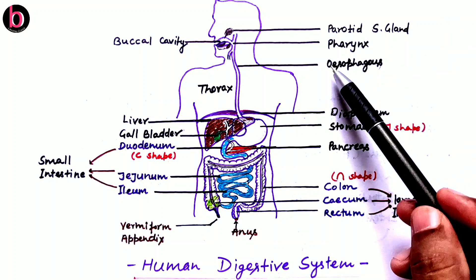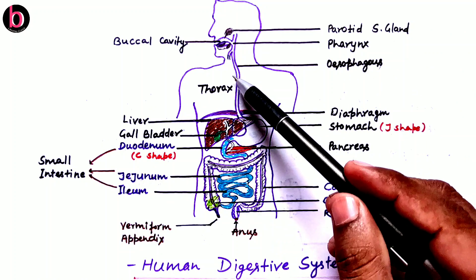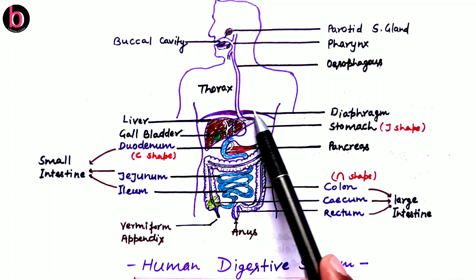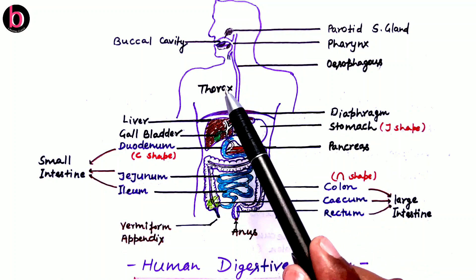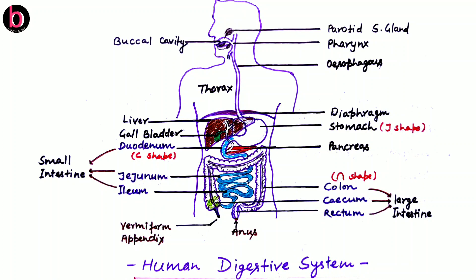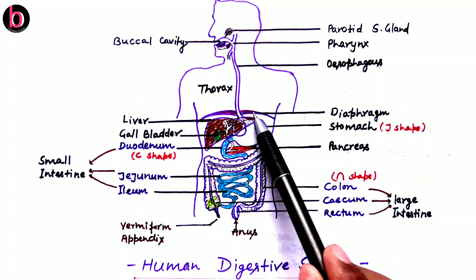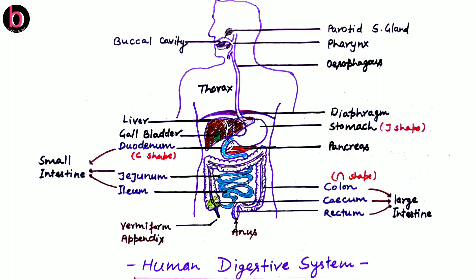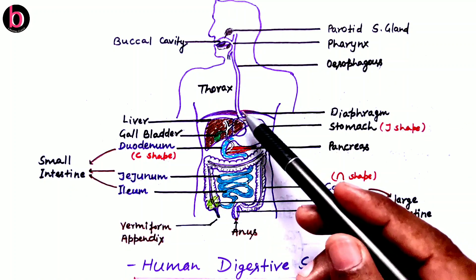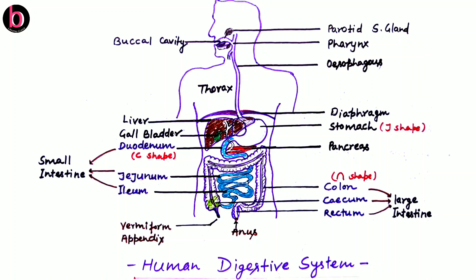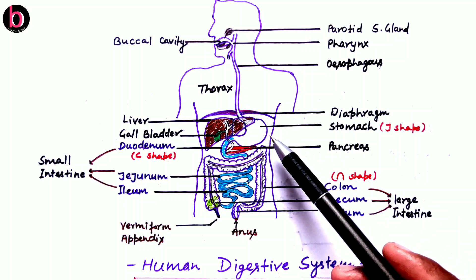After the pharynx there is the next elongated tube-like structure known as the esophagus or food pipe. Its length is nearly 25 centimeters. The esophagus passes through the diaphragm — the muscular structure that divides the body into the thoracic cavity above (carrying the lungs and heart) and the abdominal cavity below, which carries most parts of the human digestive system.